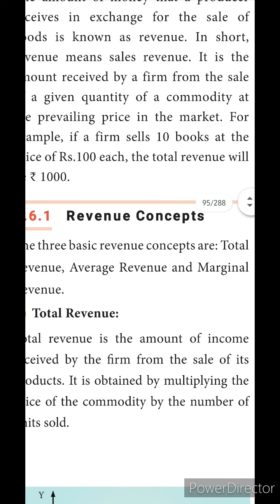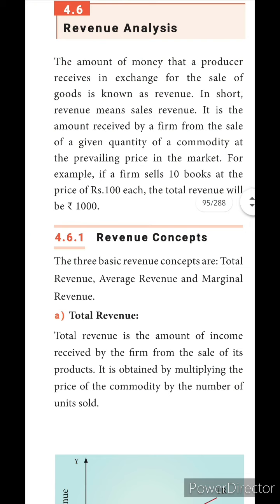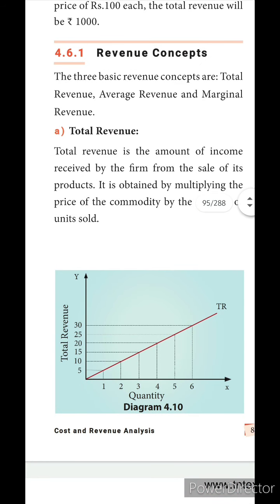Now we will look at the revenue concepts. The revenue concepts are total revenue, marginal revenue, and average revenue. Total revenue is the amount of income received by the firm from the sale of its products. If you sell one product you get 5 rupees, two products gives 10, three products gives 15, four products gives 20 — because each product costs 5 rupees. So the total revenue goes on increasing as you sell more.